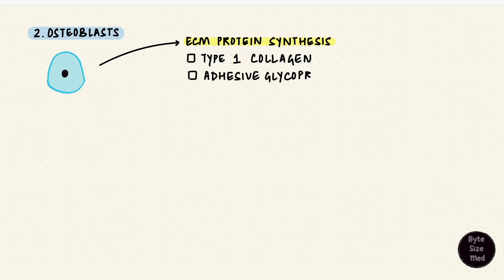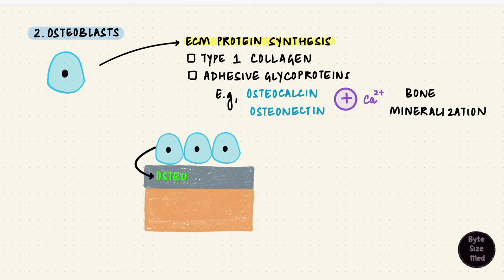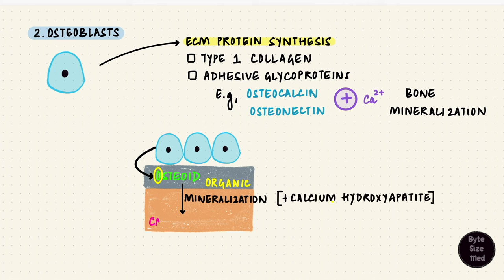Adhesive glycoproteins like osteocalcin and osteonectin which bind avidly to calcium and are thus important for bone mineralization. This matrix that's synthesized by osteoblasts is called osteoid. It's bone matrix with the protein components but it's not calcified yet. That osteoid undergoes mineralization where inorganic components like calcium hydroxyapatite get added to it and that forms the calcified bone matrix.